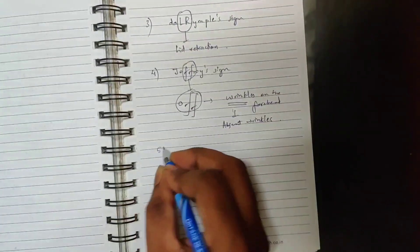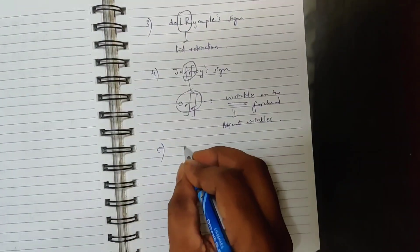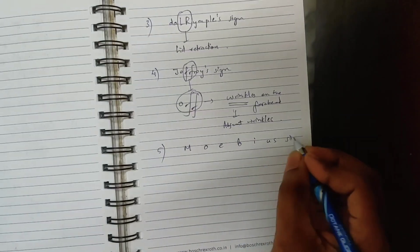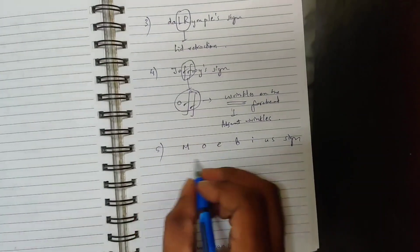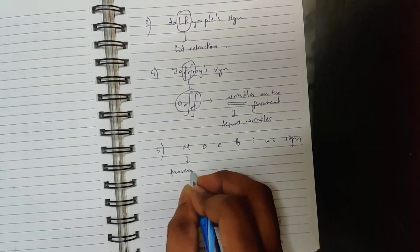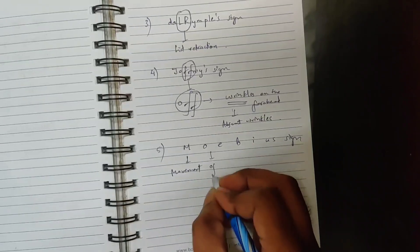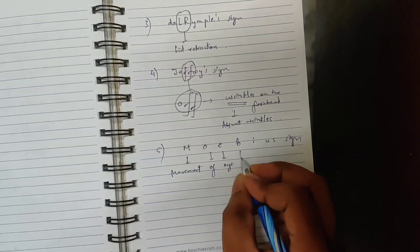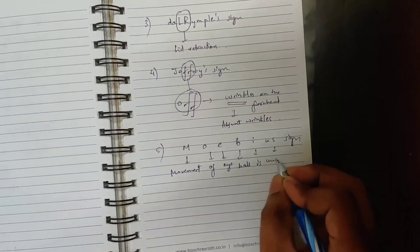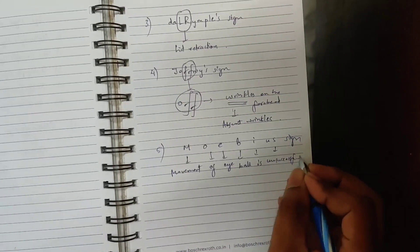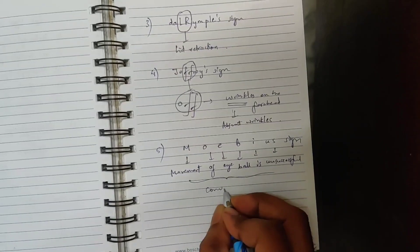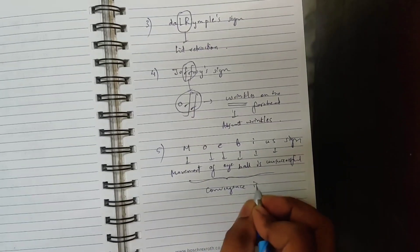Coming to the last sign, which is Moebius sign. Movement of eyeball is unsuccessful, so in short, convergence is lost.